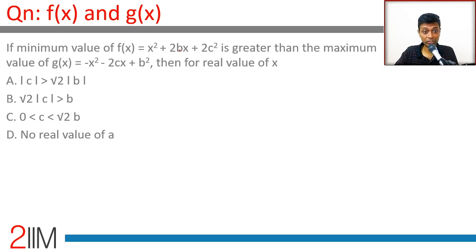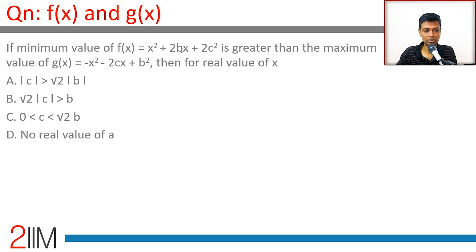If the minimum value of f(x) = x² + 2bx + 2c² is greater than the maximum value of g(x) = -x² - 2cx + b², then for real values of x, what is the condition? Let's first look at f(x).